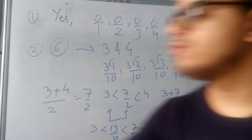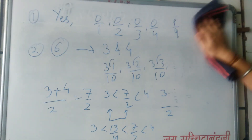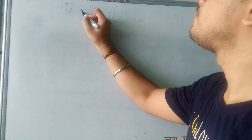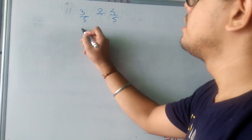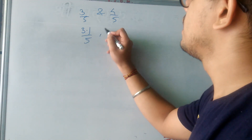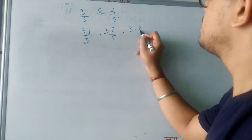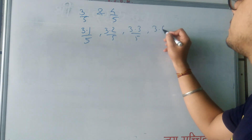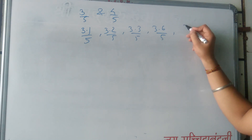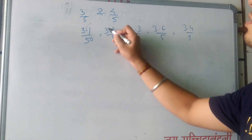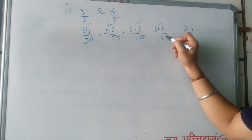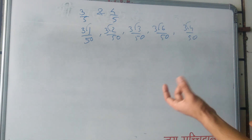I have told you both methods — use whichever you feel is suitable. Now the next question is: find 5 rational numbers between 3 upon 5 and 4 upon 5. We know that 3.1 by 5, 3.2 by 5, 3.3 by 5, 3.6 by 5, or any number — we have plenty of numbers. Just remove the decimal and place a 0.